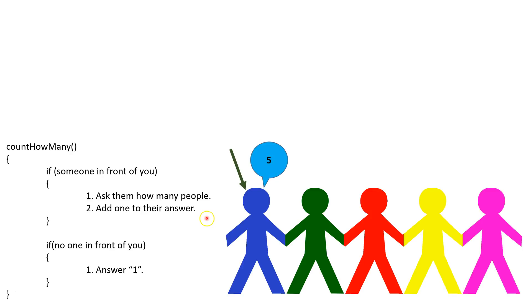Finally, blue adds one to green's answer and responds five. Blue gives his answer back to the teacher, now that the algorithm is complete.